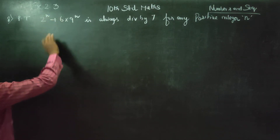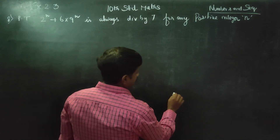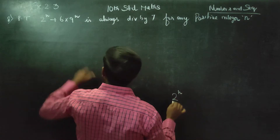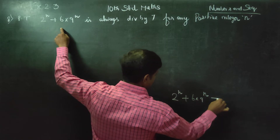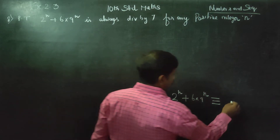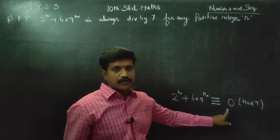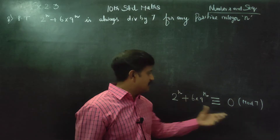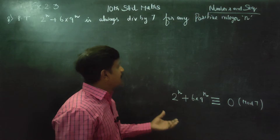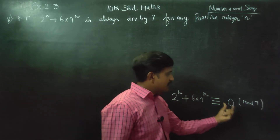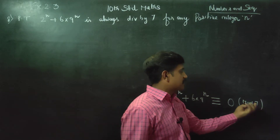We have to prove this is divisible by 7. The final answer: 2 power n plus 6 into 9 power n is congruent to 0 mod 7. If your remainder is 0, then this is divisible by 7. The main sum is congruent to 0 mod 7. This is modular mathematics, modulo of 7.